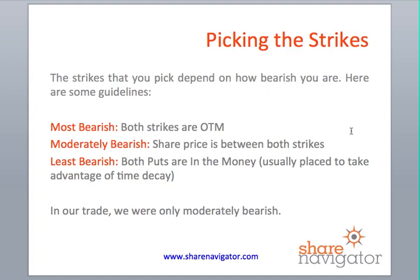Picking the strikes depends on how bearish you are. You're most bearish when both strikes are out of the money — for example, if SPY was at $211 and you picked the $207/$204 puts, requiring a large price drop to profit. A moderately bearish trade has the share price between both strikes, which is what we did. You're least bearish when both puts are in the money — strike prices above the share price — typically used to exploit time decay.